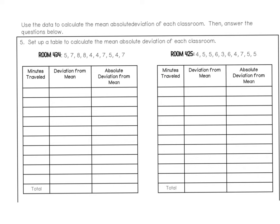Go ahead and calculate the MAD value for each one of these tables. It might help you to arrange the numbers from least to greatest since several of these numbers are the same — when you're subtracting, it'll save you some time. Remember, room 434 had an average of 5.9 and room 425 had an average of 5. Pause the video, try to calculate the MAD value for each table, and then press play to check your answer.